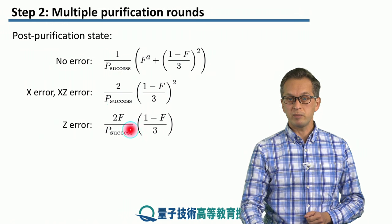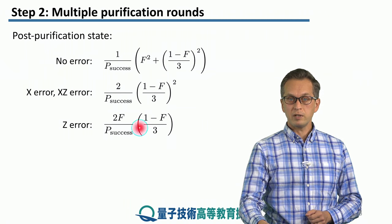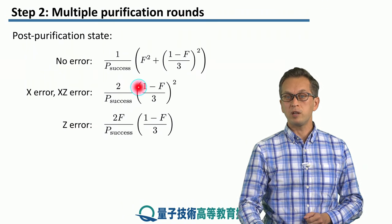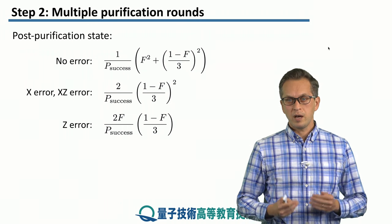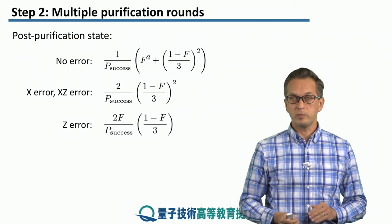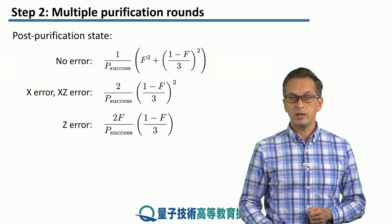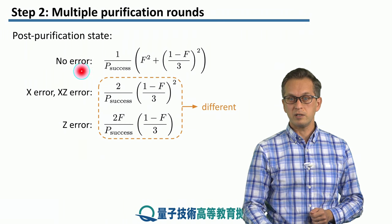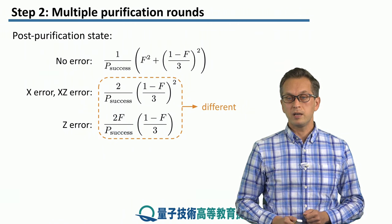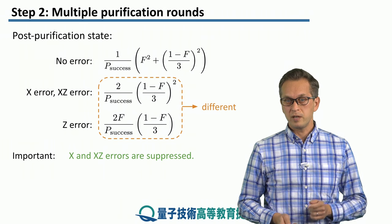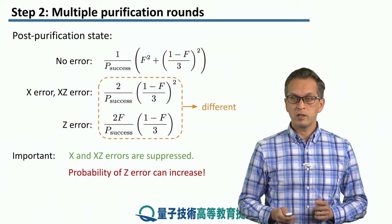The z error is given by a different expression. Looking at the x and xz error probability, we see that they both depend on the factor (1 - F) squared. Since we're often distributing states with high base fidelity F, 1 - F will be quite small, so squaring it makes it even smaller — meaning x and xz errors get suppressed. But that's not the case for the z error probability. Here we only have a linear term (1 - F), not a quadratic term, multiplied by the base fidelity F. So x and xz errors will get suppressed, but the z error might actually get amplified.